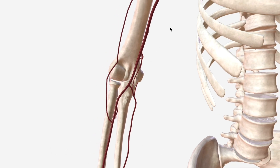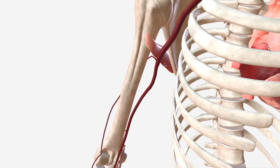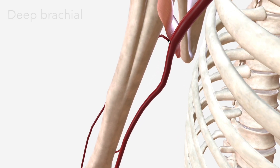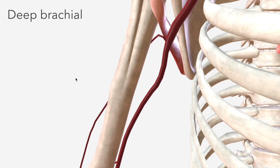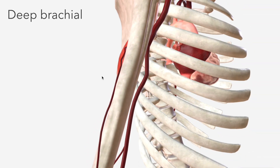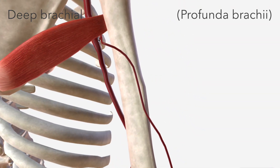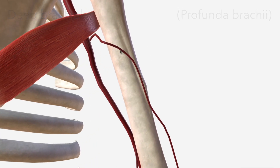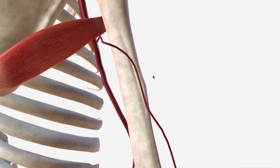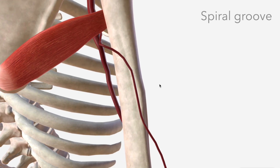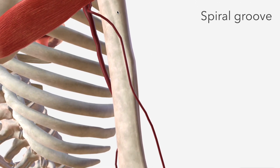The first branch of the brachial artery is the deep brachial artery, known in older anatomy texts as profunda brachii. The deep brachial artery continues around posteriorly, descending briefly in the part of the humerus called the spiral groove, where it's accompanied by the radial nerve.